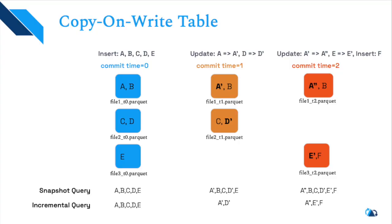Let's understand these concepts with a small example. Here on my screen I have a slide explaining the different query types for a Copy-on-Write table. Let's say you inserted records A, B, C, D, and E at time T0. A snapshot query shows all records: A, B, C, D, E. An incremental query also shows A, B, C, D, E. At time T1, if you update A to A' and D to D', snapshot query returns A', B, C, D', E — while incremental query shows only A' and D', meaning only what changed.